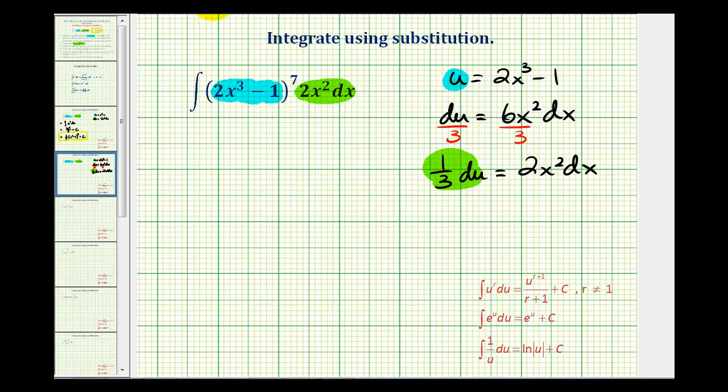So now we can rewrite this in terms of u. We'll have u to the 7th. But then 2x squared dx is equal to 1 third du. So we'll pull the 1 third out, and then we have du.